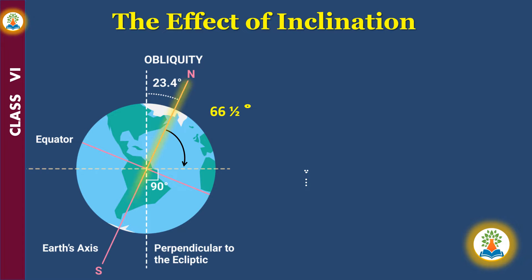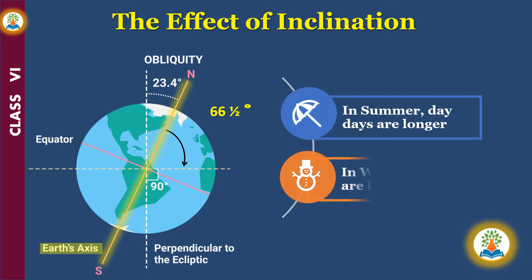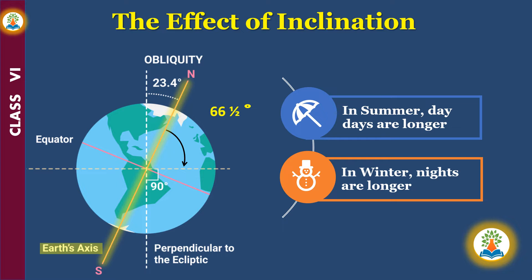Due to this inclination, we have an impact on the climate of Earth — mainly in summer the days are longer, and in winter the nights are longer.